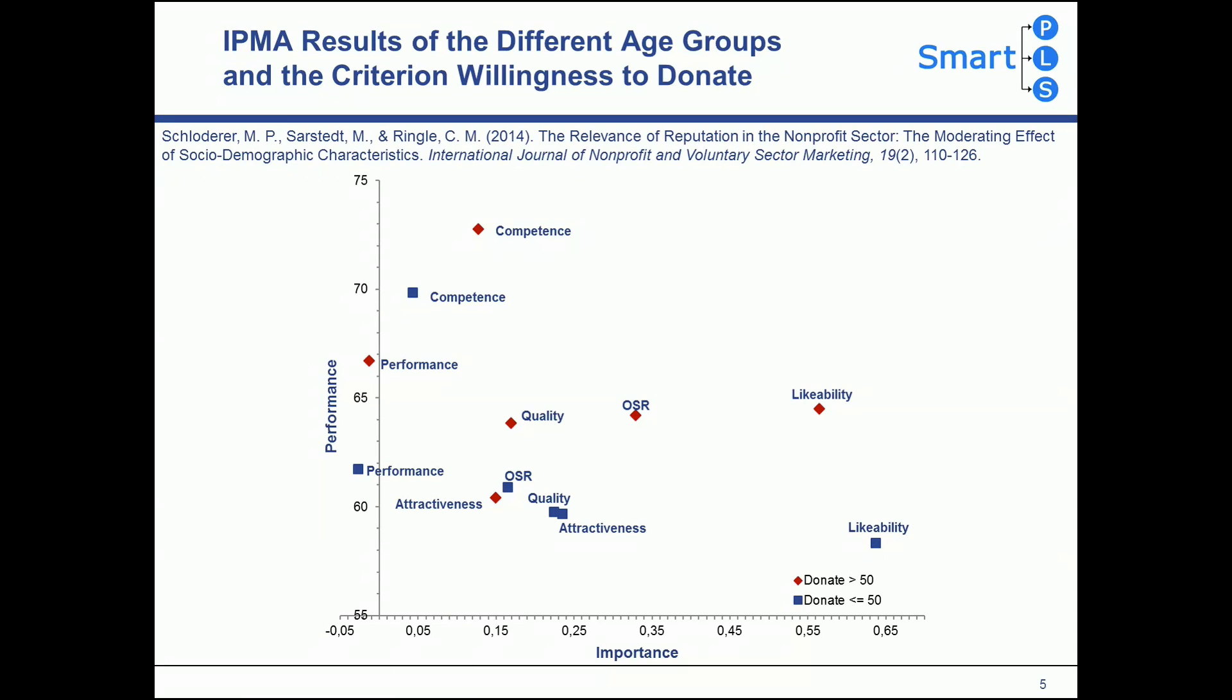Here we see the IPMA results of an empirical application. The key target construct is willingness to donate. The importance performance map shows all other constructs in the structural model that explain willingness to donate. But in this example we contrast the results of two different groups. The red symbol shows the outcomes of older persons while the blue symbol shows the results for younger persons. The comparison of IPMA results across groups reveals some interesting outcomes.